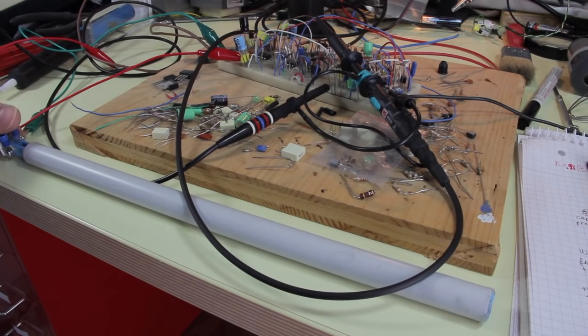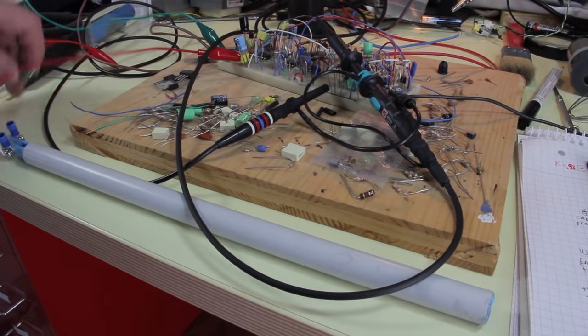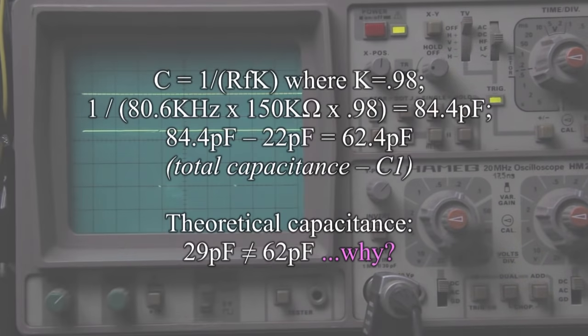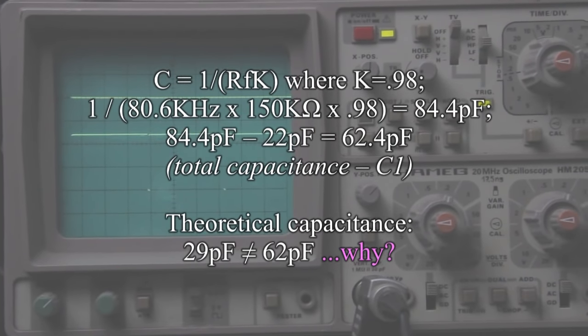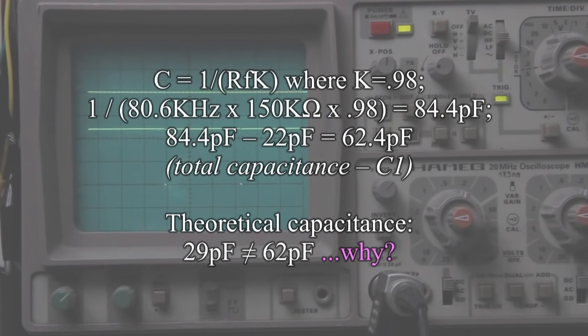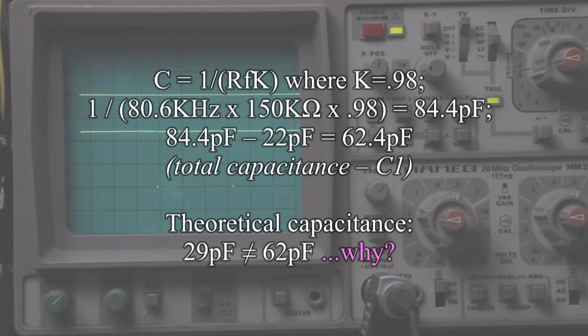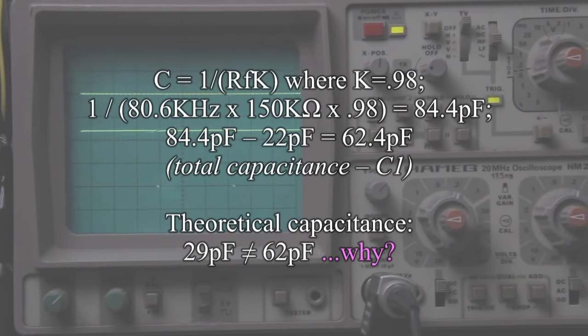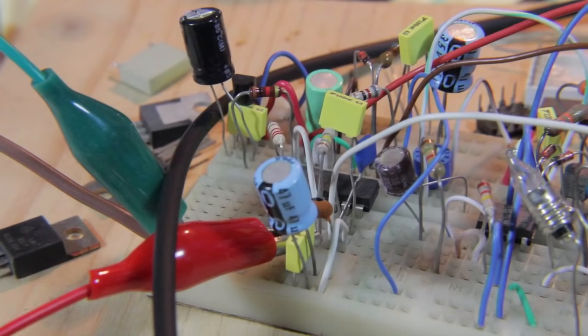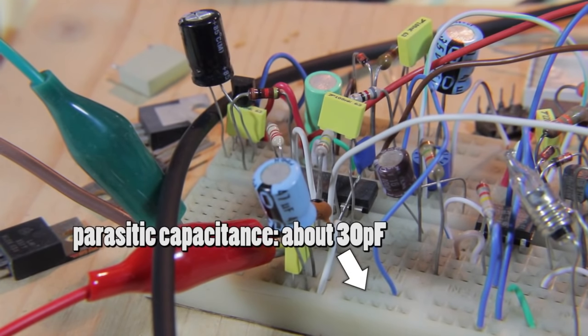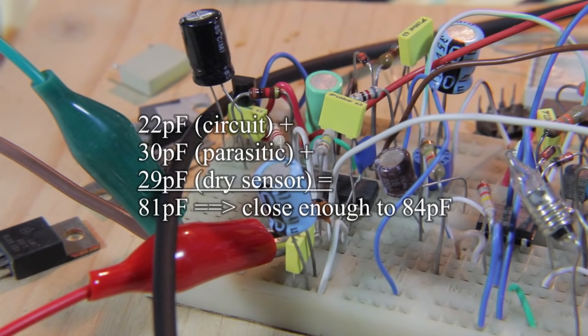When the sensor is dry, the frequency is 80.6 kHz. Calculating the capacitance based on the frequency, we have a total capacitance of 84.4 picofarads. Subtracting the 22 picofarad capacitor of the circuit, the result is a capacitance of 62.4 picofarads, which is quite different from the calculated value of 29 picofarads. Why this difference? I think it depends on the parasitic capacitance of the circuit in the breadboard, that I know is about 30 picofarads. So if we add further 30 picofarads, the likely parasitic capacitance, the final result is close to the theoretical value.